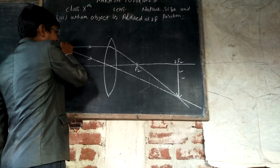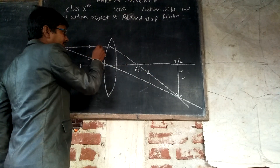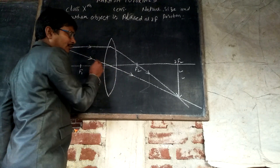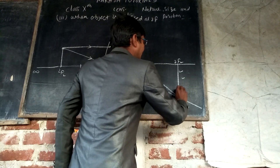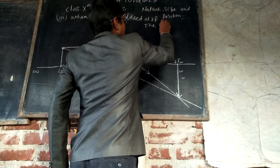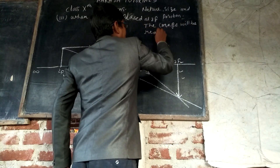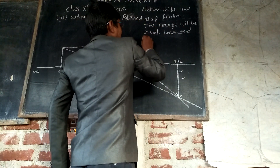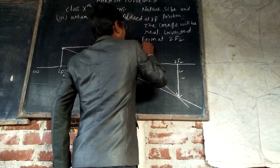To recall: when the object is at 2F₁, one ray moves parallel to the principal axis and passes through F₂; another ray passes through optic center O. Both rays cross each other at 2F₂ where the image forms. The image is real, inverted, forms at 2F₂, and is of the same size as the object.